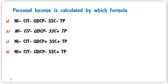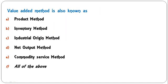Personal income is calculated by which formula? National income minus corporate income tax (CIT) minus undistributed corporate profit (UDCP) minus social security contribution (SSC), plus transfer payments. CIT, UDCP, and SSC are deducted from national income, whereas transfer payments are added to national income for calculating personal income. So B is the correct answer.